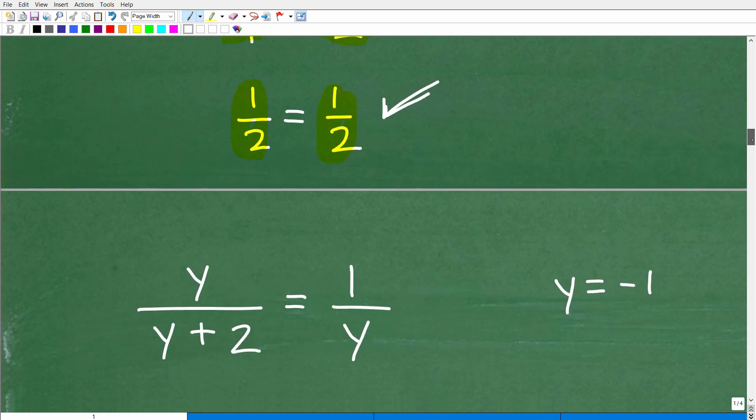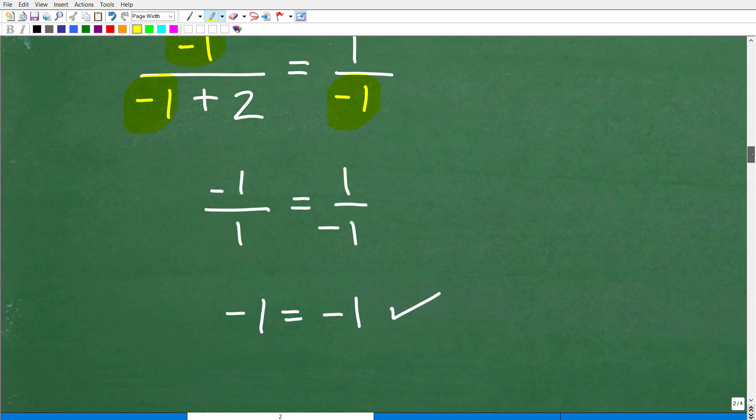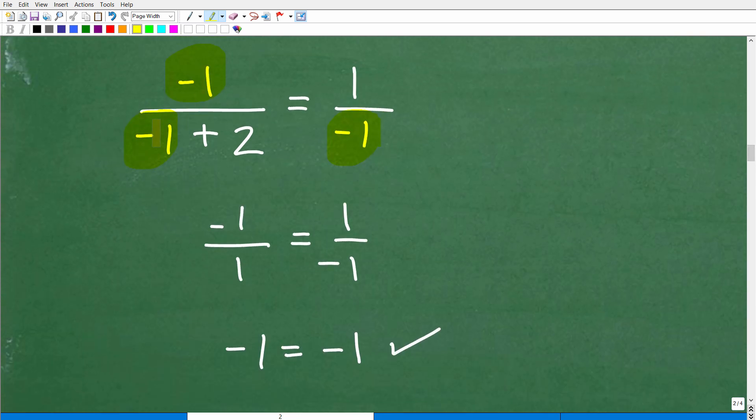All right, so now let's go ahead and check y is equal to negative one. We'll do the same thing. We'll replace this y, this y, this y with negative one, and we'll see what happens. Hopefully the left-hand side is equal to the right-hand side. So I have negative one over negative one plus two. Negative one plus two is a positive one. So negative one divided by positive one is a negative one. Then here I have one divided by negative one, one over negative one, positive divided by negative is also a negative. So negative one is equal to negative one. Guess what? Both of these are good solutions. So there you go. That's how you solve this problem.